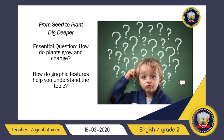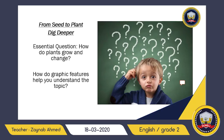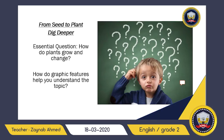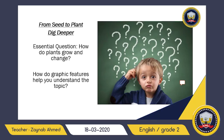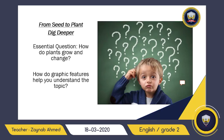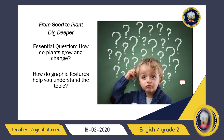When seeds fall from the tree, more trees will grow. This is the tree's life cycle. With this, you have answered how do plants grow and change. Now let's move to the second question: how do graphic features help you understand the topic? Graphic features mean diagrams, pictures, and charts — they help the reader understand more about the text.